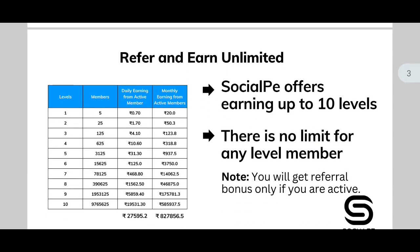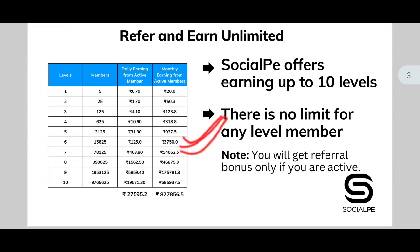The third slide is reasons to earn unlimited. First point: Social Pay offers earning up to 10 levels. Second point, very important: there is no limit for any level members, meaning you can refer unlimited persons at each level. As an example, you can see levels one to ten. If you refer five members at level one, your monthly income is 50 rupees.